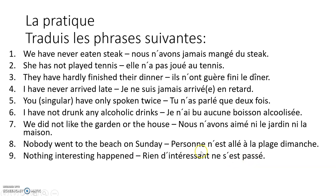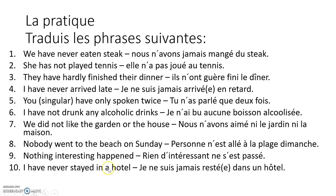'Nothing interesting happened' — rien d'intéressant ne s'est passé. We've got rien de plus our adjective, then the negative particle. Note that 'to happen' is reflexive — se passer — so we have the reflexive pronoun before the auxiliary. Order: negative particle, reflexive pronoun, auxiliary, past participle. If you're not sure about reflexives, have a look at my video on reflexives. Number ten: 'I've never stayed in a hotel' — we've got ne and jamais around the auxiliary. If you have any more questions, post them in the comments below.